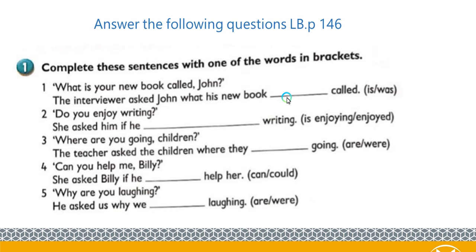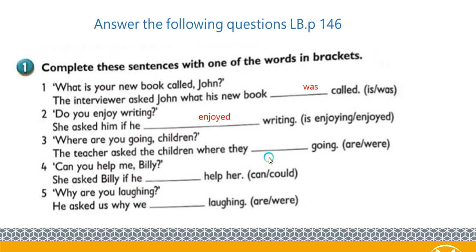Complete these sentences with one of the words in brackets. 'What is your new book called, John?' The interviewer asked John what his new book was called — 'was' is correct. 'Do you enjoy writing?' — yes or no question — she asked me if he enjoyed writing — 'enjoyed' is correct. 'Where are you going, children?' The teacher asked the children where they were going. 'Can you help me, Billy?' She asked Billy if he could help her. 'Why are you laughing?' He asked us why we were laughing.